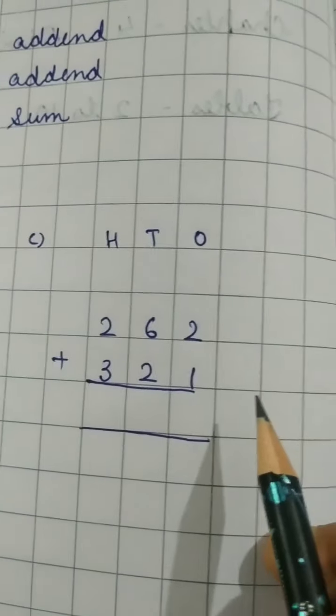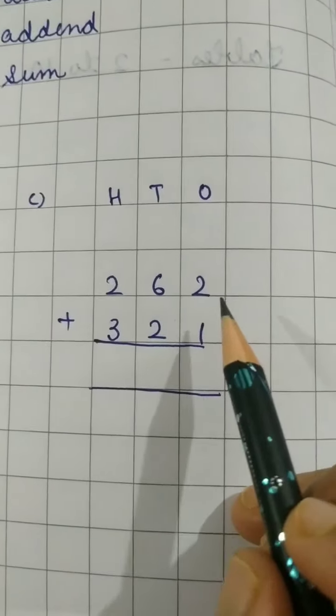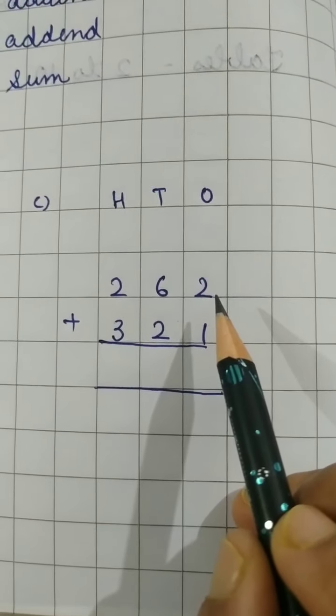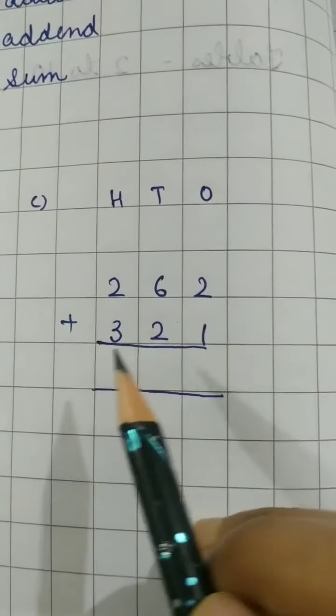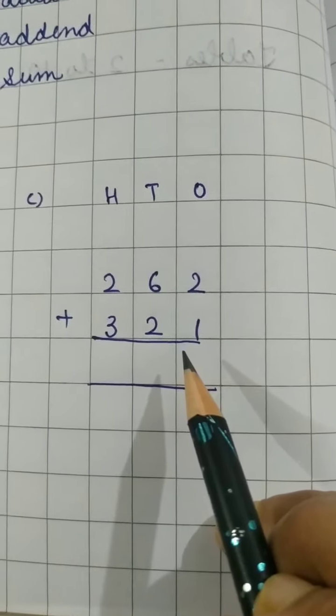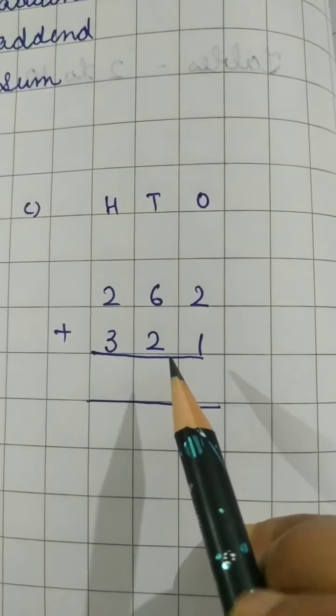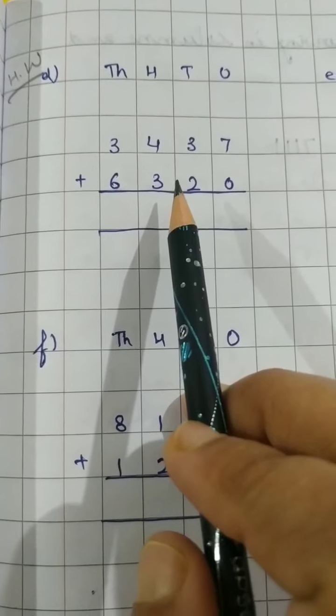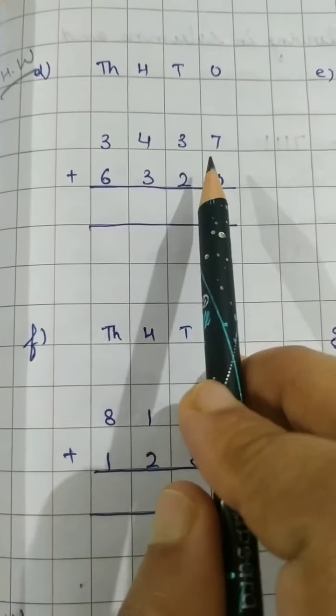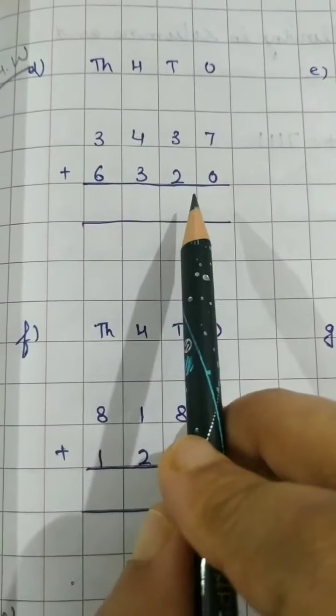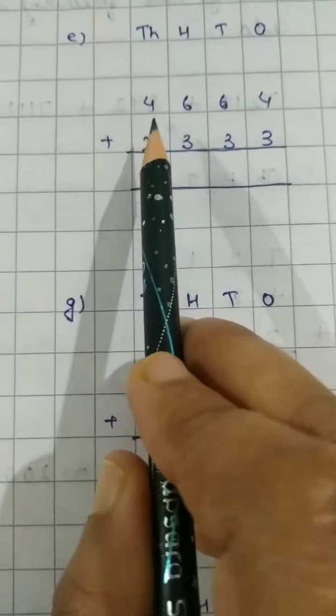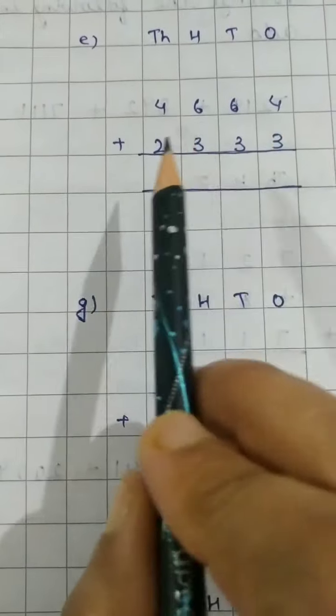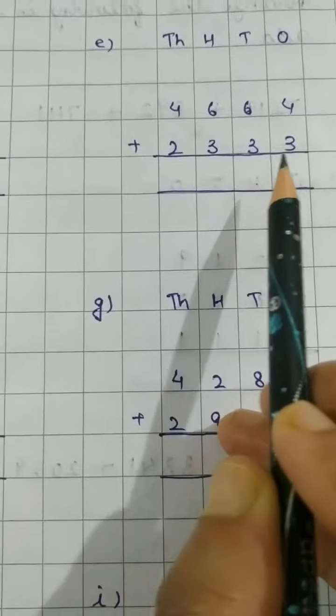Now C part. C part is an example where I have taken 3 digit numbers, 262, 321. It is very simple, you have to do it yourself. Now D part also is your homework. 3437, 6320. E part 4664, 2333.